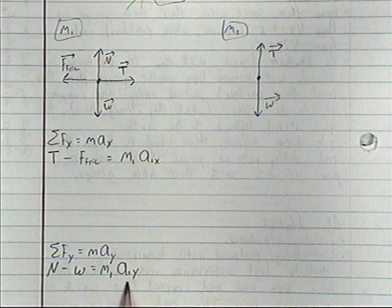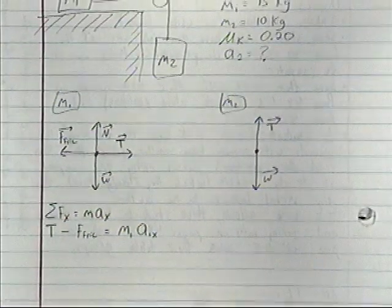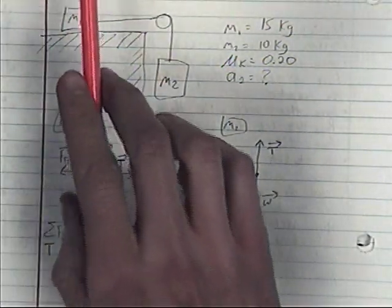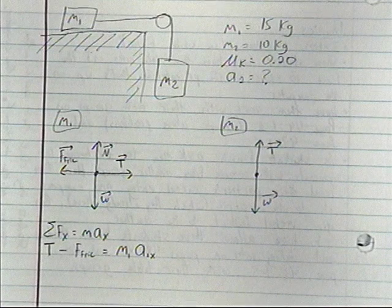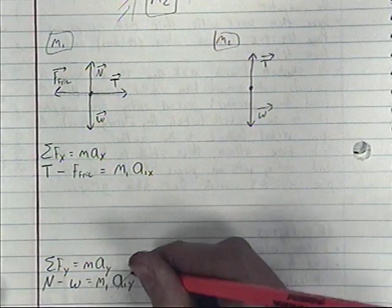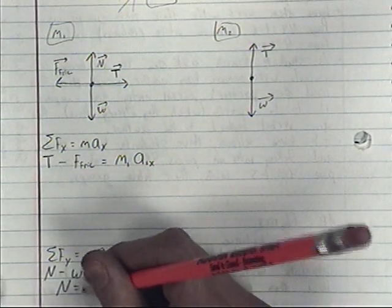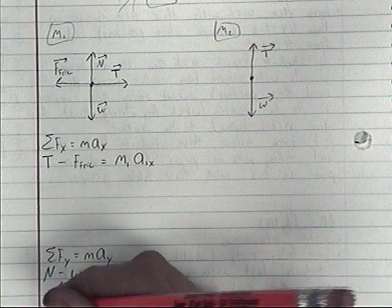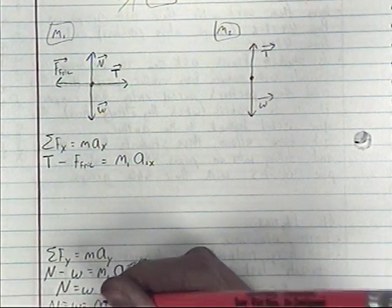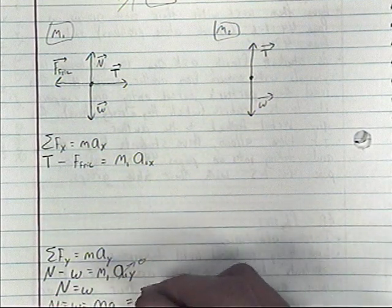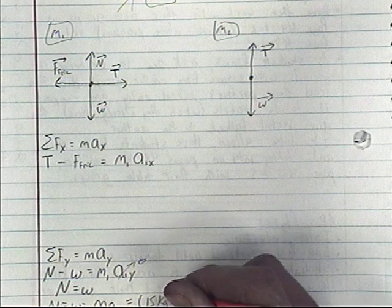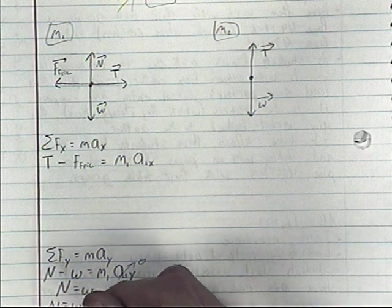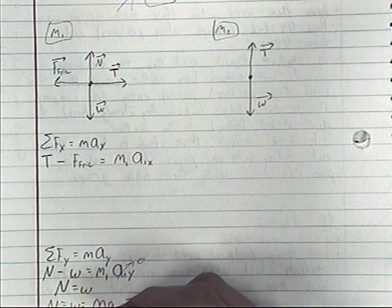Since mass one slides across the table without accelerating vertically, acceleration in y equals zero. That means normal force equals weight, which equals mass times gravity: 15 kilograms times 9.8 meters per second squared. So the magnitude of the normal force equals the magnitude of the weight — both equal 147 newtons.